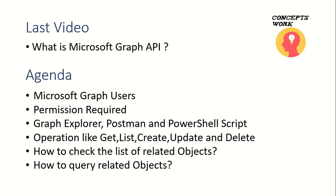The agenda of this video will be knowing how the user object works, what permissions you need, which endpoint you should access. I'll be using Graph Explorer, Postman, as well as PowerShell — three different platforms — to access the same set of information protected by Microsoft Graph API. I'll also show you how to do operations like GET, LIST, CREATE, UPDATE, and DELETE, and how to check the related object list.